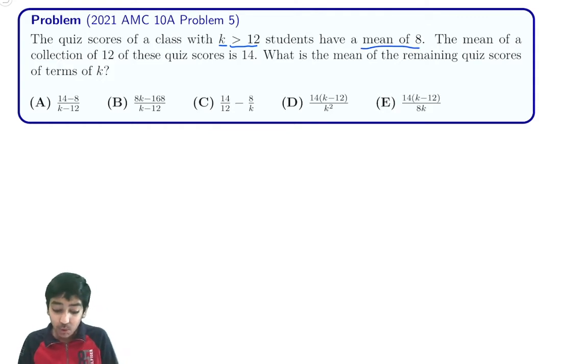The mean of 12 of these k students, remember we know k is more than 12, so 12 out of these k students have a mean of 14. What is the mean of the remaining quiz scores in terms of k?